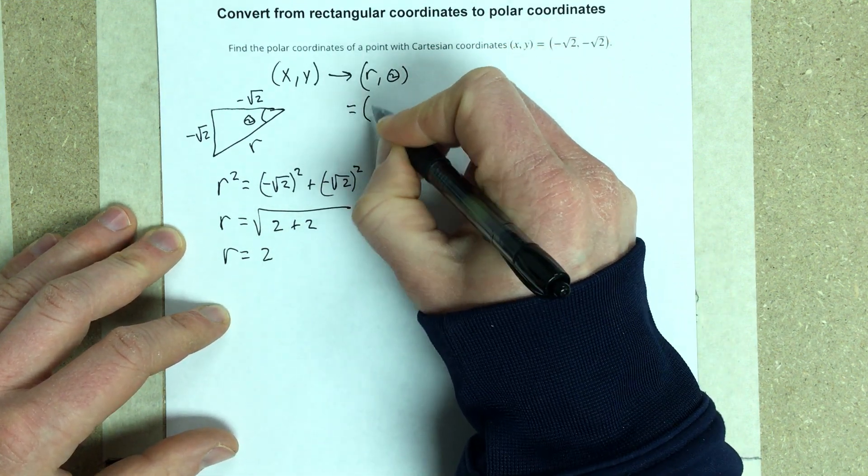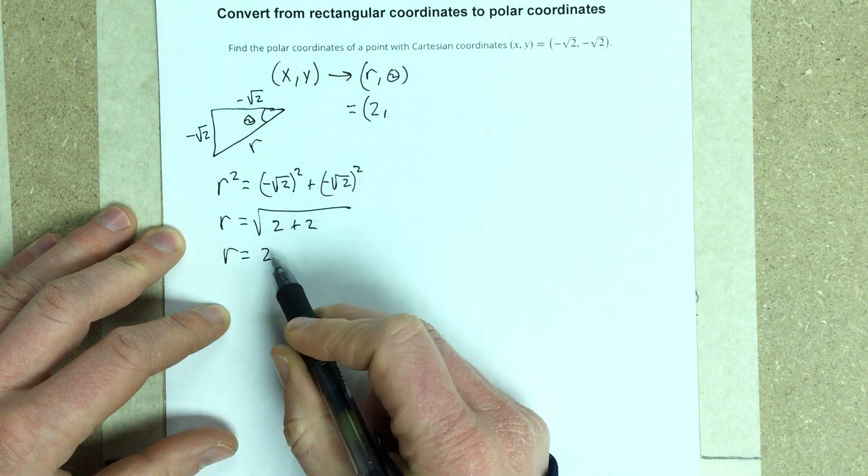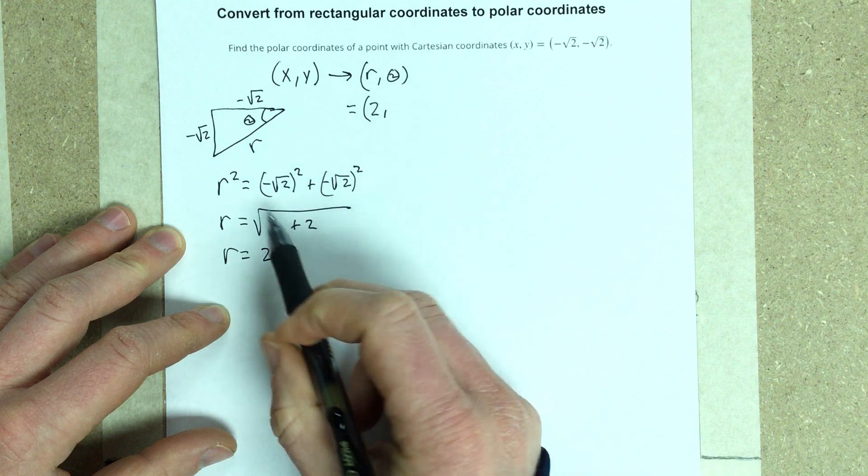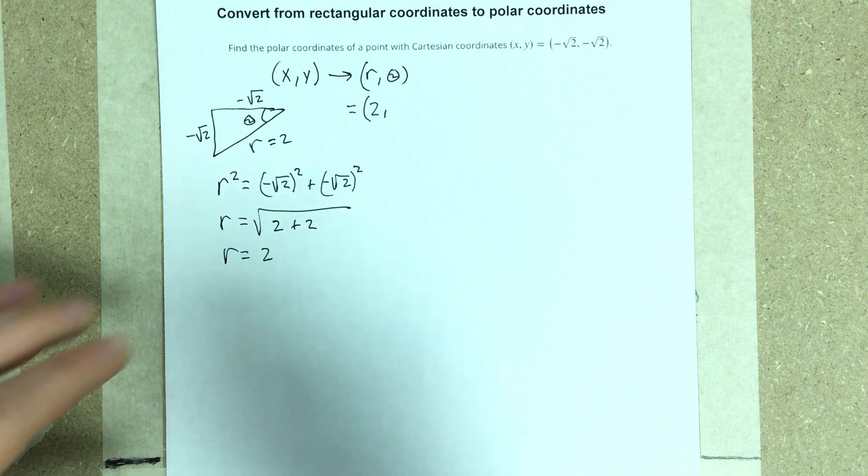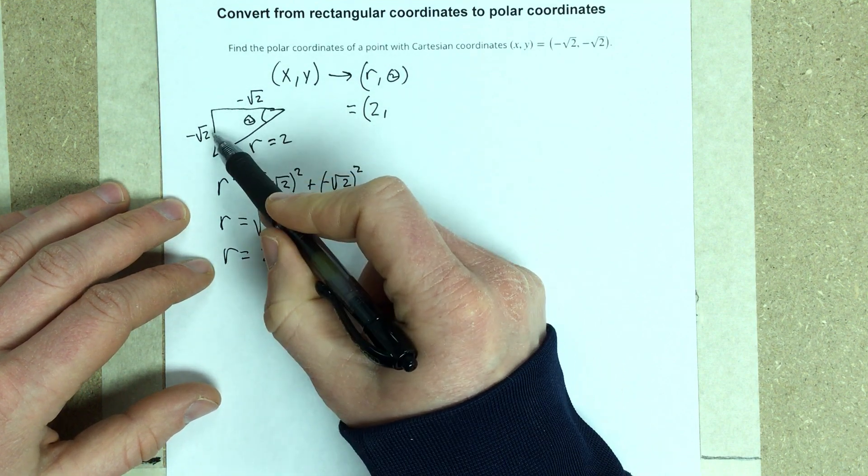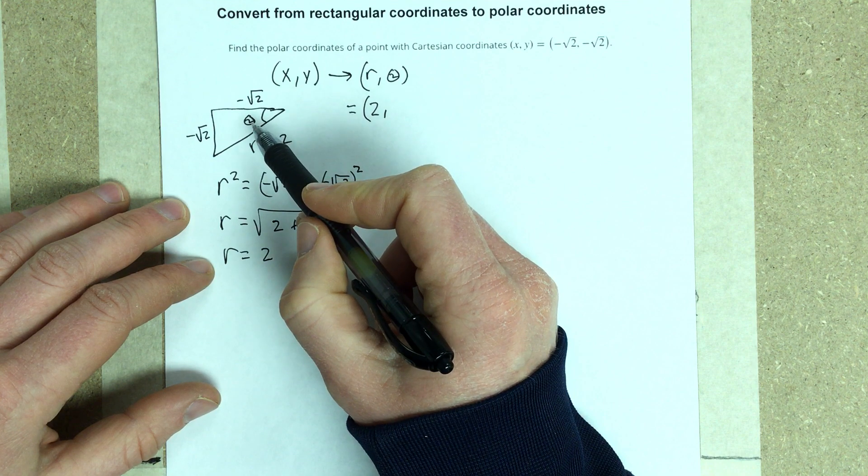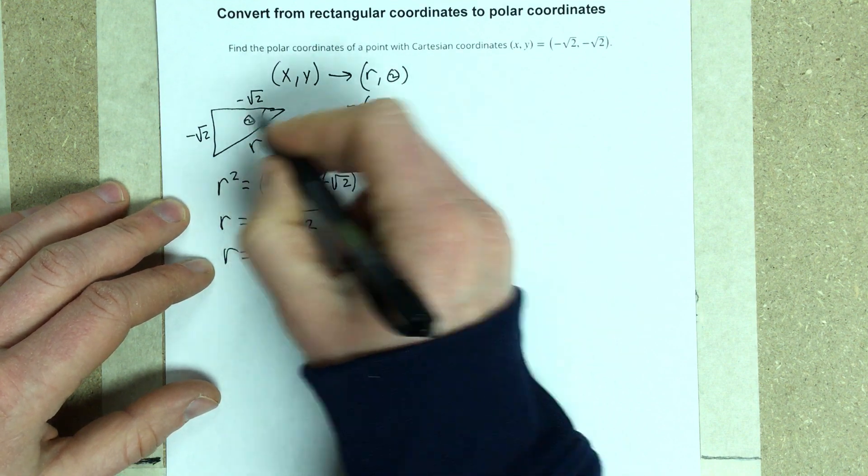So I've got 2 comma some angle here. Now to find this angle theta, I'm going to go ahead and use, I know this is 2 now, so I can either use, well I could use tangent here, let's use tangent here.